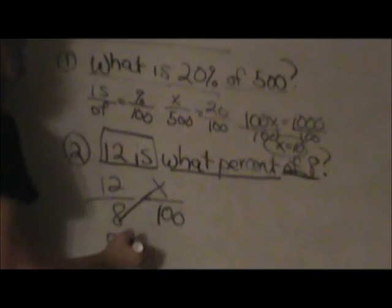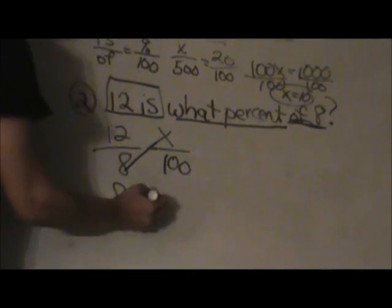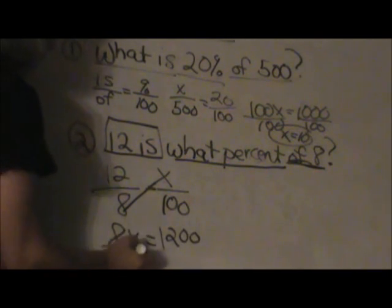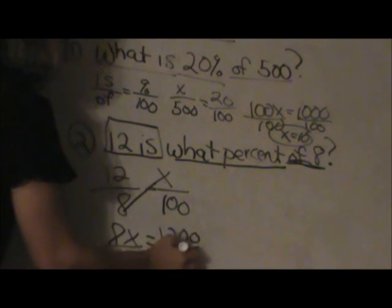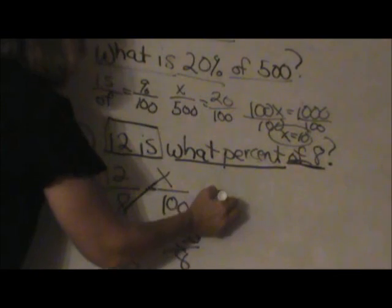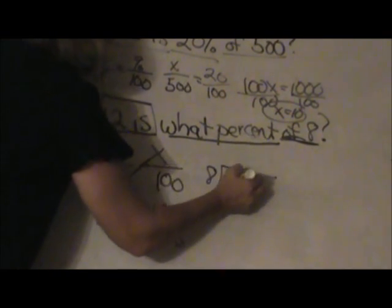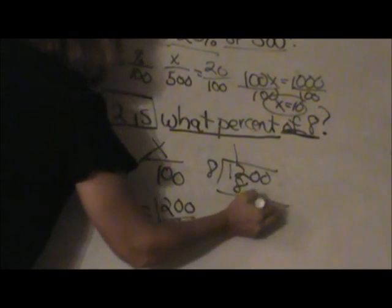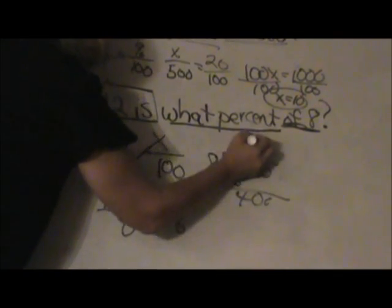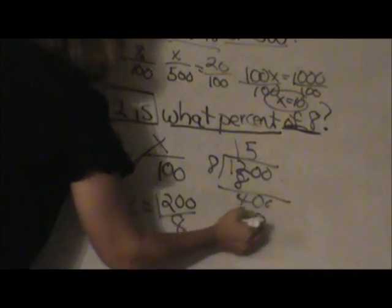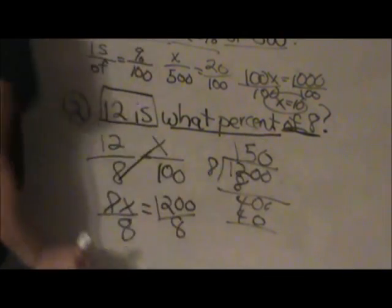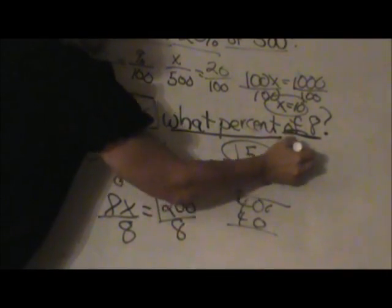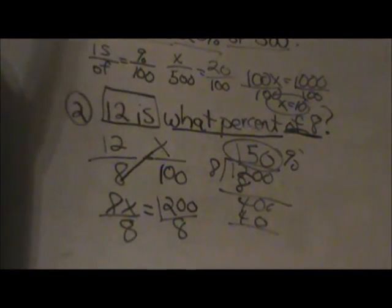8 times x is 8x. 12 times 100 is 1200. Then I'm going to divide both sides by 1200. And so 8 goes into 1200. Let's see. 1, 4, and 40. Subtract. So I end up with 150. So that means 12 is 150% of 8.